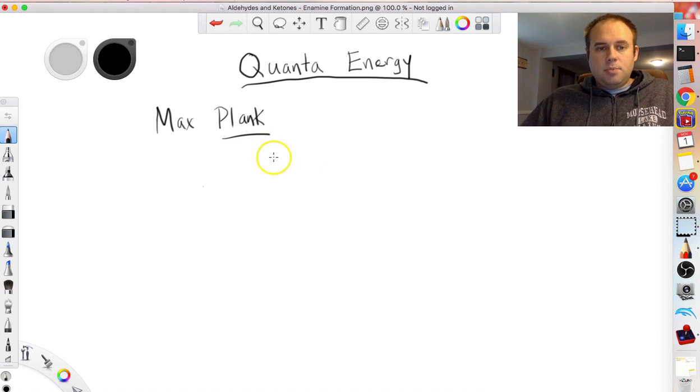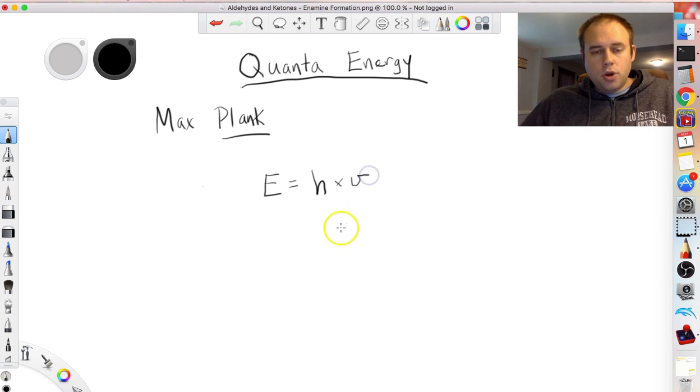So Max Planck developed something called Planck's constant and he related it to quantized energy. And he said the energy for a given photon, and this was in coordination with Albert Einstein in the early 1900s, is equal to some constant h which we refer to as Planck's constant times the frequency, remember nu from the previous lecture, and that will give you the quantized energy.